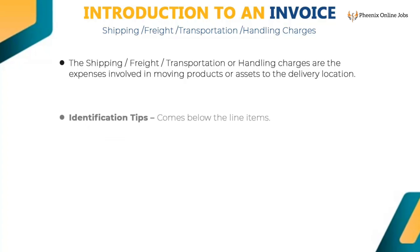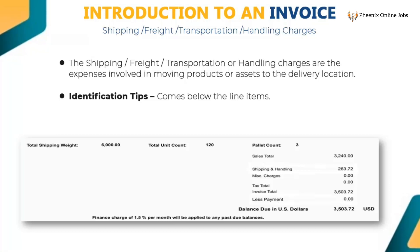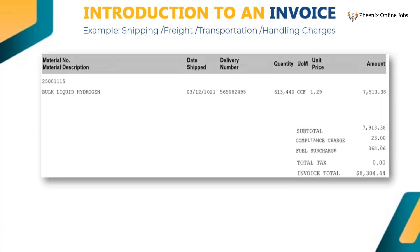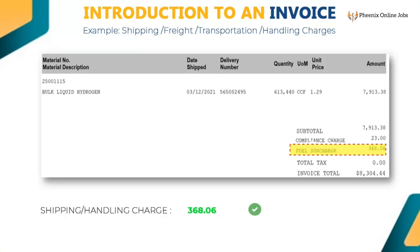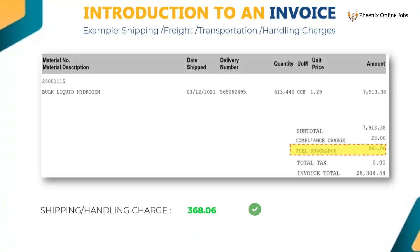Shipping, freight, transportation, or handling charges are expenses involved in moving products or assets to the delivery location. Fuel surcharge is also a shipping charge. It comes below the line items. Key only the numeric value — 368.06 is the fuel surcharge for this example. Do not key the words 'fuel surcharge,' 'freight,' 'handling,' or 'shipping charges.' If these words are already populated, then remove them.